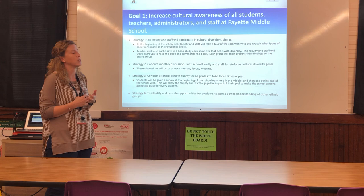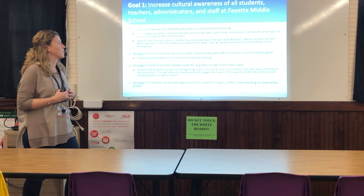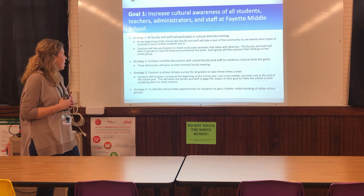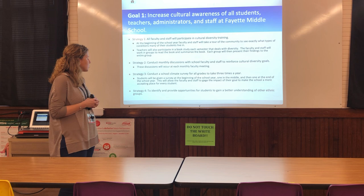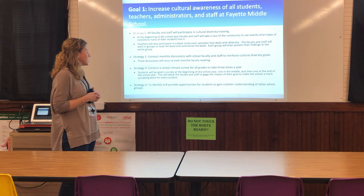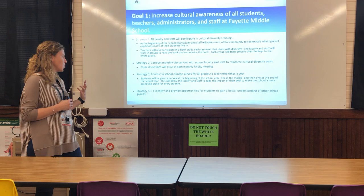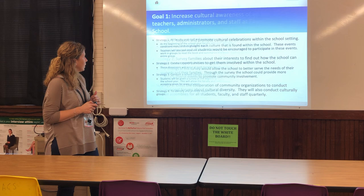There are four strategies for Goal 1. Strategy one: all faculty and staff will participate in cultural diversity training. At the beginning of the school year, faculty and staff will tour the community to see the conditions many of their students live in. Teachers will also participate in a book study each semester that deals with diversity, working in groups to read and summarize the book, then presenting their findings to the entire group. Strategy two is to conduct monthly discussions with school faculty and staff at each monthly faculty meeting to reinforce cultural diversity goals. Strategy three is to conduct a school climate survey for all grades three times a year — at the beginning, middle, and end of the school year — to gauge the impact of efforts to make the school more inclusive. Strategy four is to identify and provide opportunities for students to gain a better understanding of other ethnic groups.